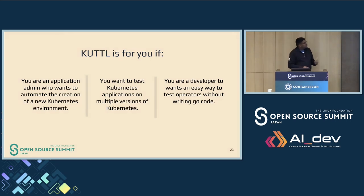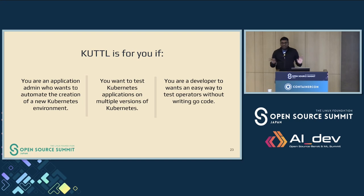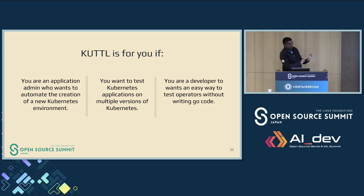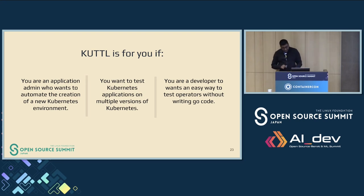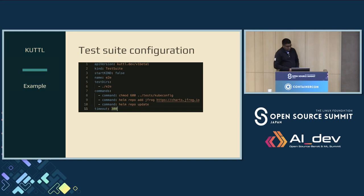Cuttle is used for application developers or application admins who want to create automation of Kubernetes environments — say you don't know anything about Kubernetes but want to deploy and test your application. You can test the application on multiple versions of Kubernetes. If you're a developer who wants to easily test operators, you can do it without writing Go code. It is developed in Go, but it can be used for testing any objects on Kubernetes.